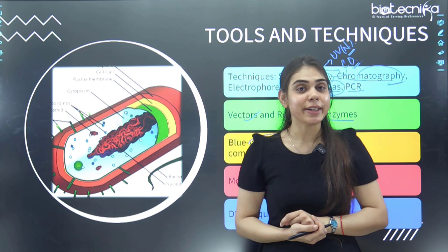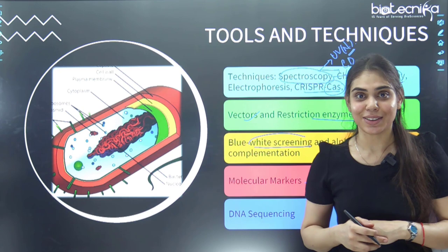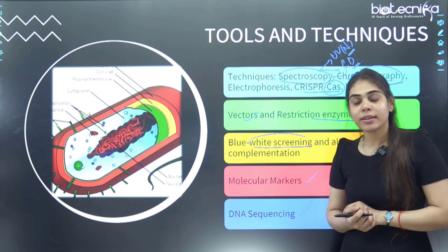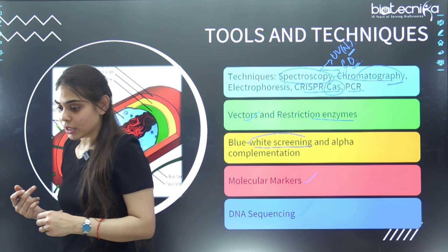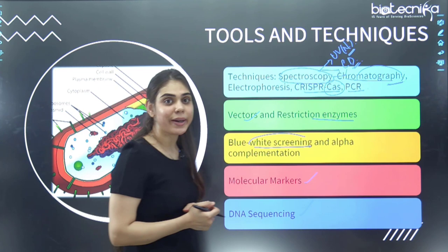The last part here is DNA sequencing. They ask about sequence complementarity in Maxim-Gilbert sequencing and other methods. They also focus on automatic sequencing. Just have a glance at the DNA sequencing part.